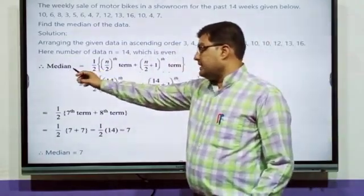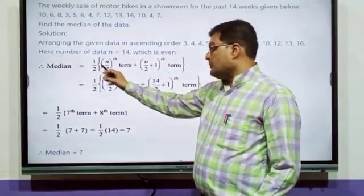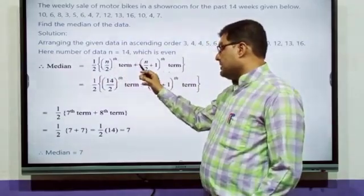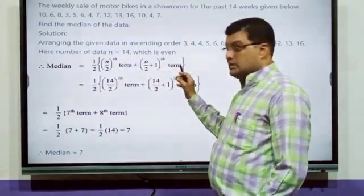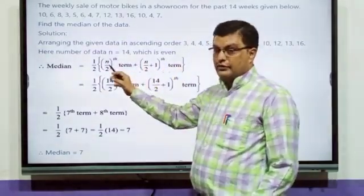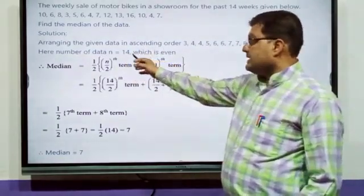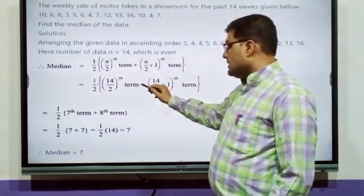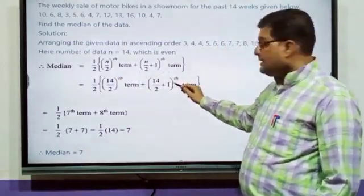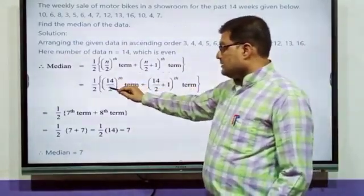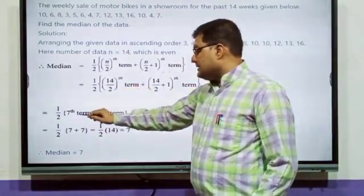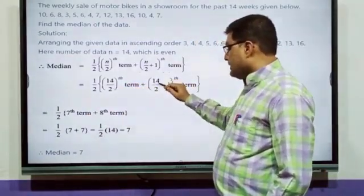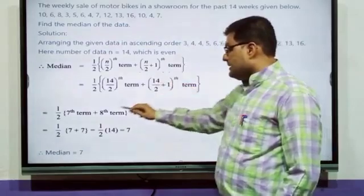The formula of median in the even: 1/2[(n/2)th term + (n/2 + 1)th term]. We have to put the value of n. We got the value of n is 14. 1/2[(14/2)th term + (14/2 + 1)th term]. Cancel 14 and 2, you will get 7th term. Here also you cancel 14 and 2, you will get 7 plus 1, that is 8th term.